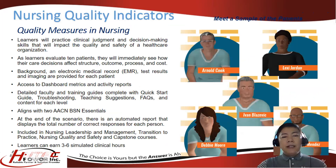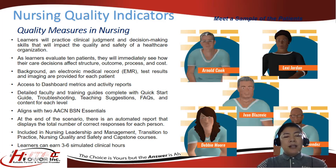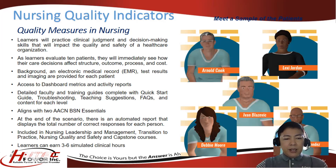Another module is nursing quality indicators. Learners practice clinical judgment and decision-making skills that impact the quality and safety of a healthcare organization. As learners evaluate 10 patients, they immediately see how their care decisions affect structure, outcome, process, and cost. Background, electronic medical records, test results, and imaging are provided for each patient. It has dashboard metrics, activity reports, detailed faculty training guides, and aligns with AACN BSN Essentials. At the end of the scenario, an automated report displays the total correct responses. It is included in nursing leadership and management, transition to practice, and nursing quality and safety capstone courses. Learners can earn 3 to 6 simulated clinical hours.